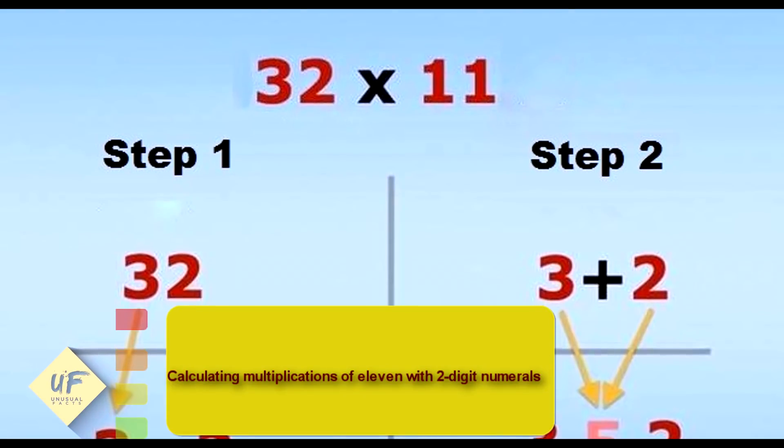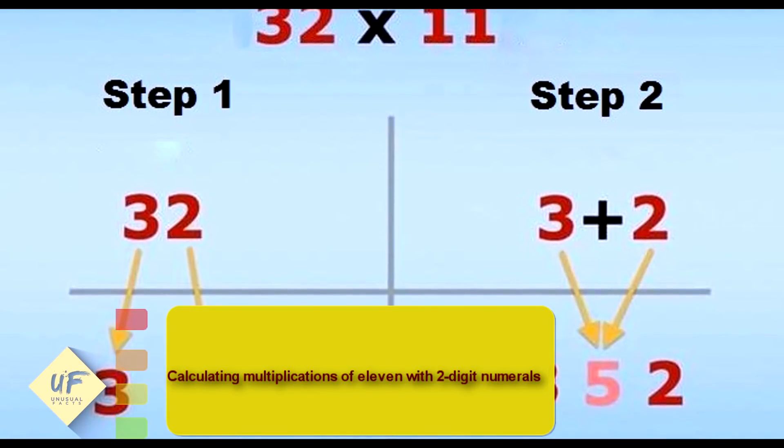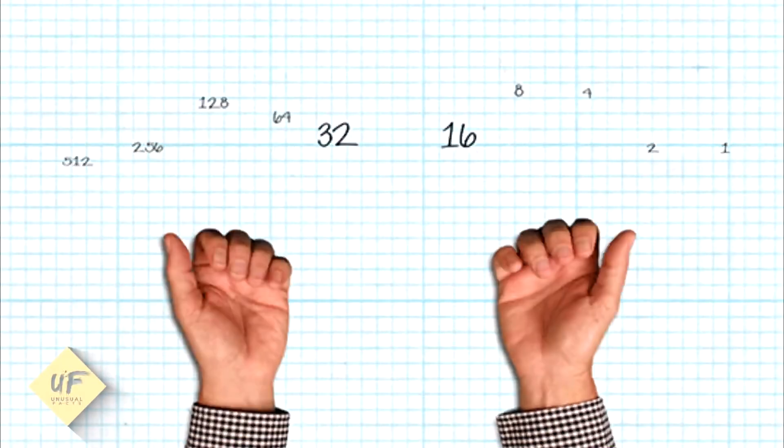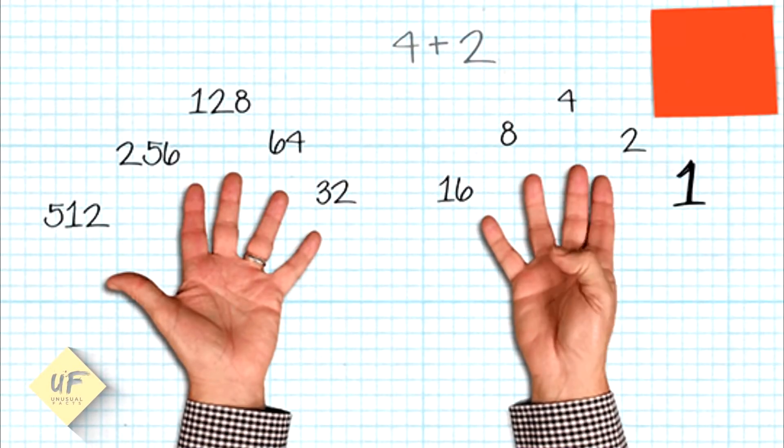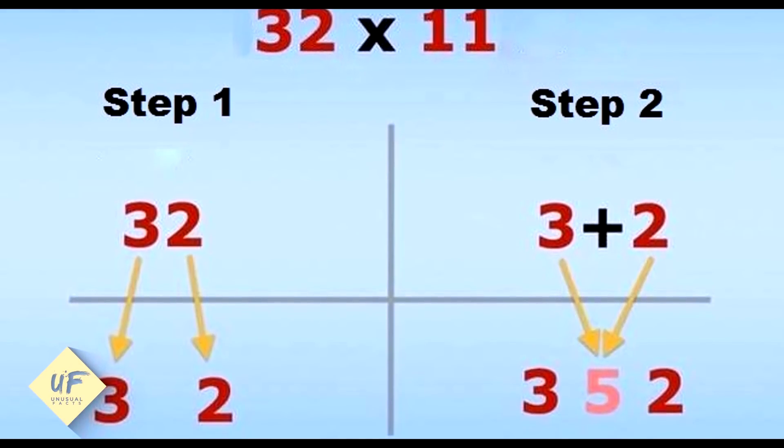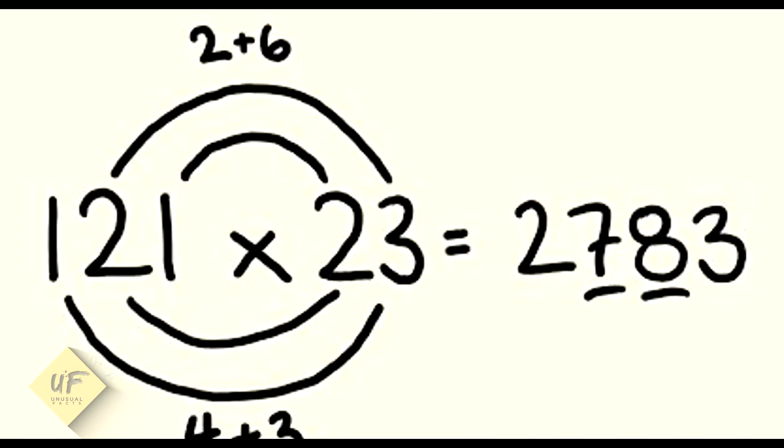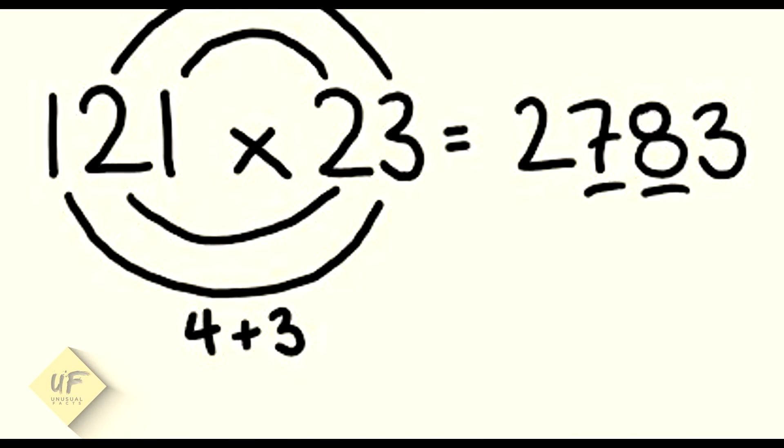Number three: Calculate multiplications of 11 with two-digit numerals. This calculation takes two simple steps. In the first step, split the digits where one becomes the hundreds and the other becomes the units. In the second step, sum the digits and the result becomes the tens.